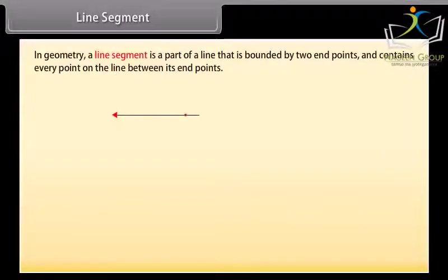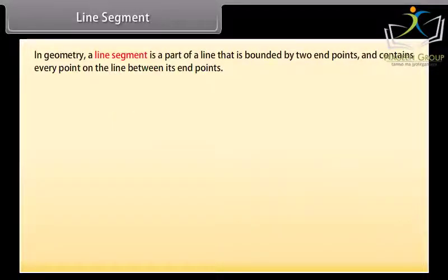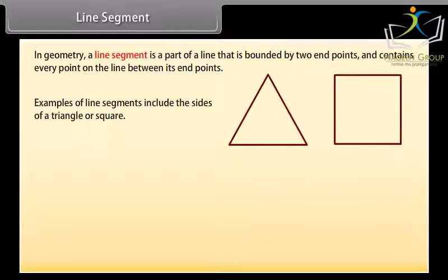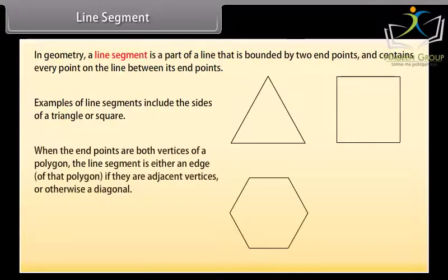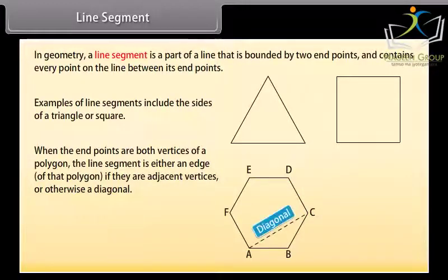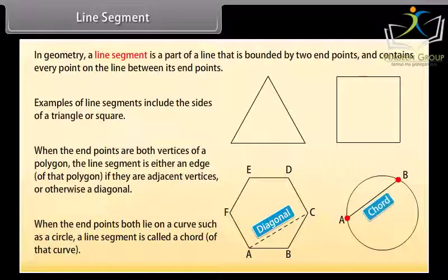In geometry, a line segment is a part of a line that is bounded by two end points and contains every point on the line between its end points. Examples of line segments include the sides of a triangle or a square. More generally, when the end points are both vertices of a polygon, the line segment is either an edge of that polygon if they are adjacent vertices, or otherwise a diagonal. When the end points both lie on a curve such as a circle, a line segment is called a chord of that curve.